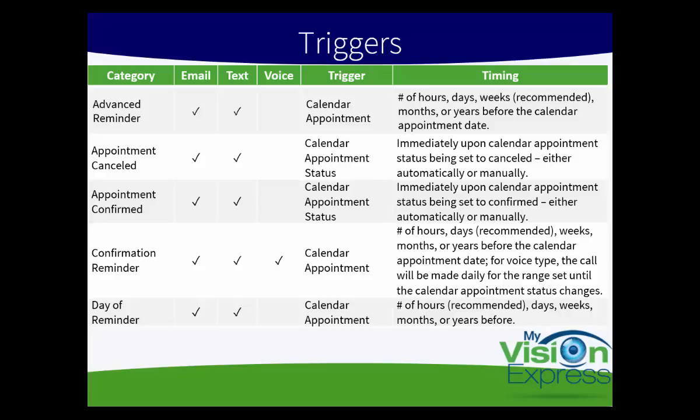The appointment canceled message can be sent via email or text. It is triggered by a calendar appointment status and is sent immediately upon that status being set to Canceled, either automatically or manually. This means if your patient cancels via email or text message, their appointment is automatically changed to Canceled and this message gets sent immediately. Appointment Confirmed works the same way, except for Confirmed status — if your appointment is changed to Confirmed, this message will be sent if it is active.